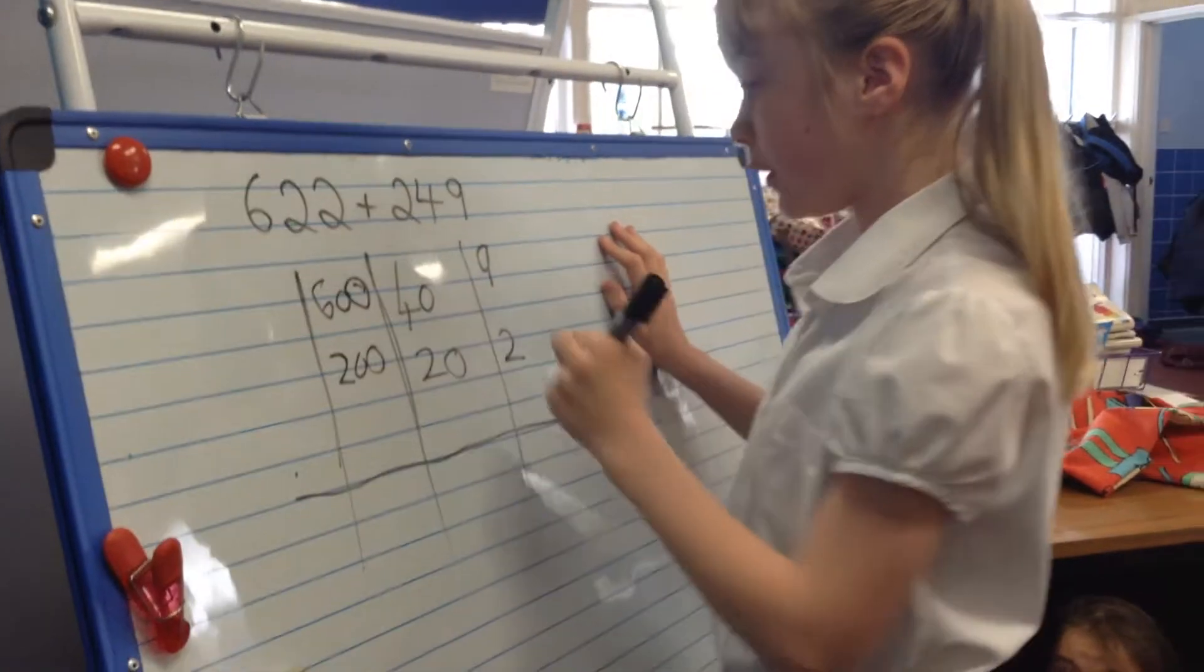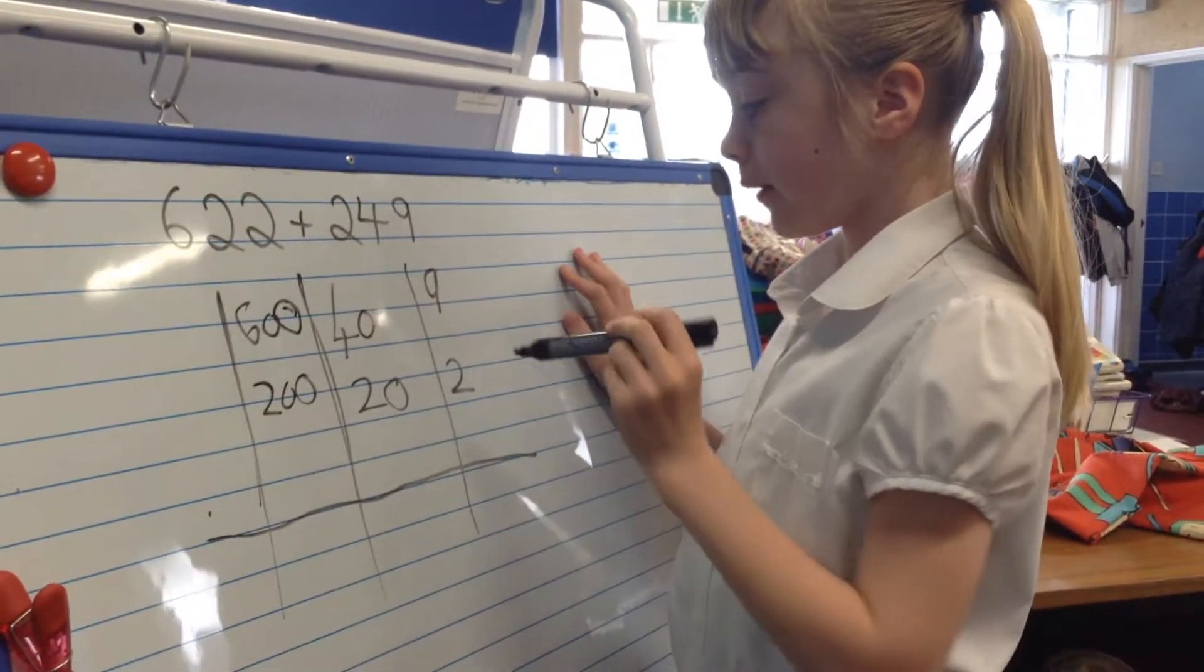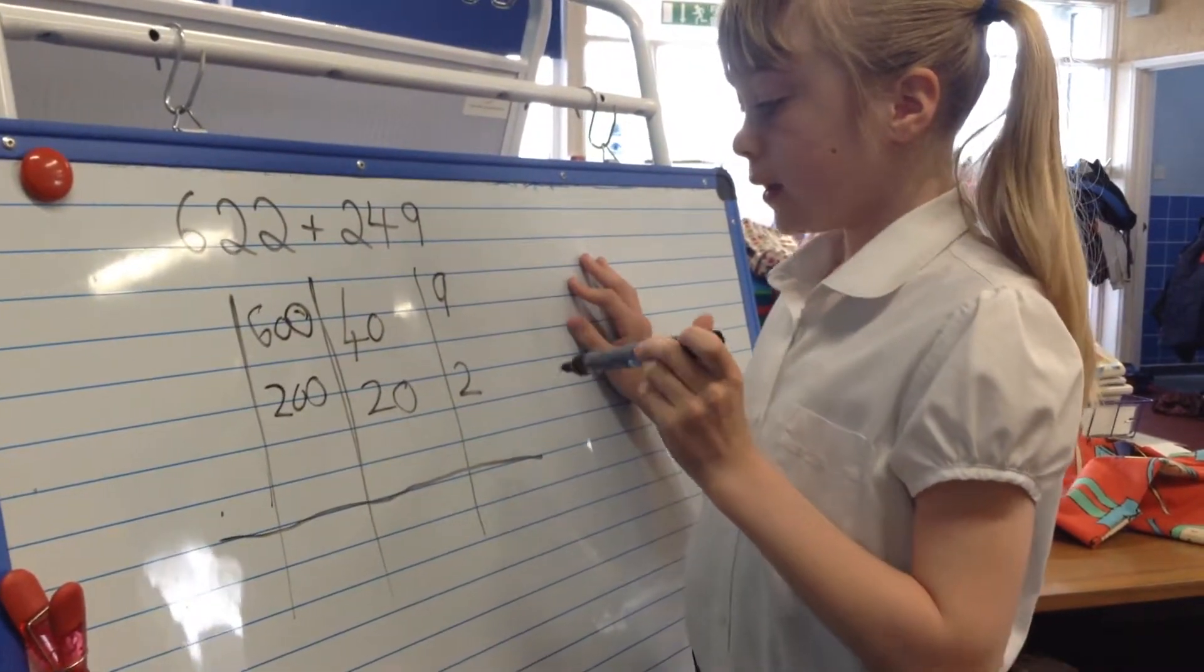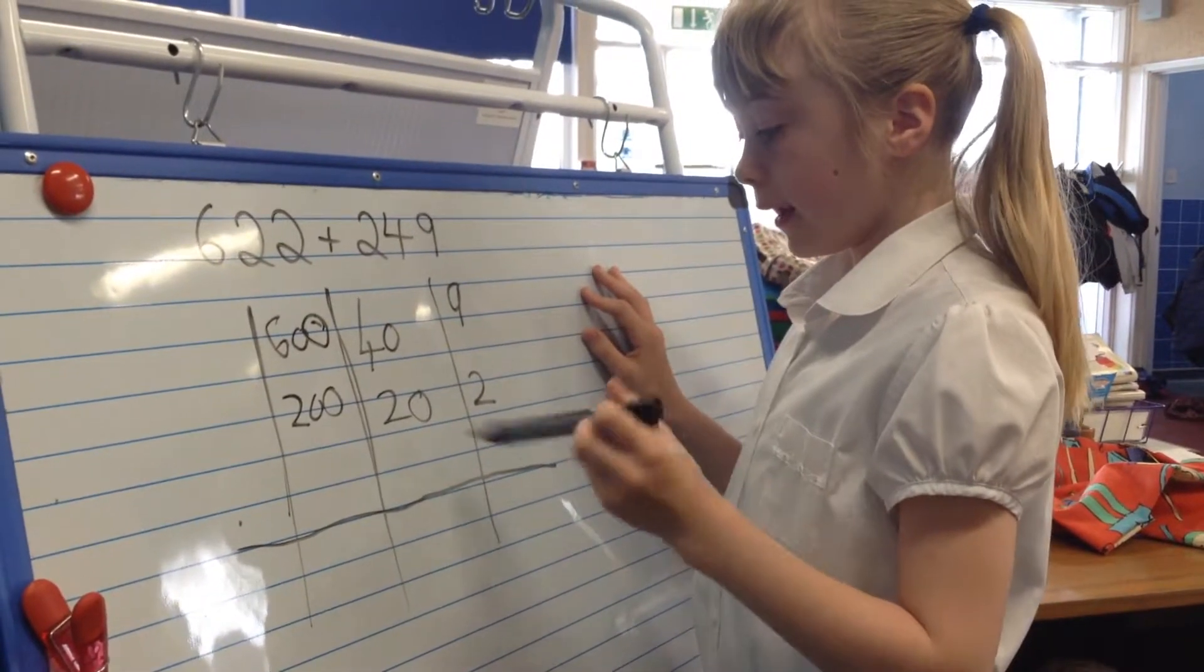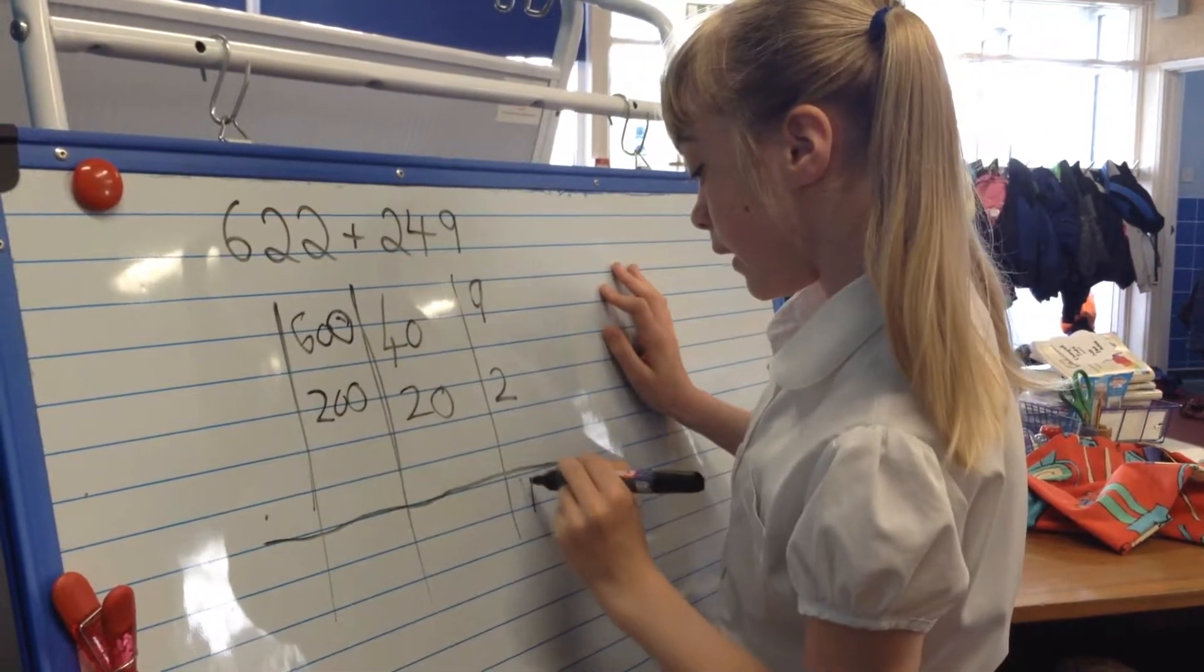And then you would add the ones at first, so that would be 11, so then you would write that under the line.